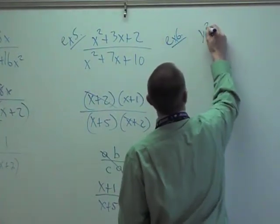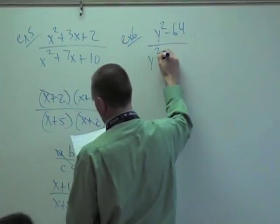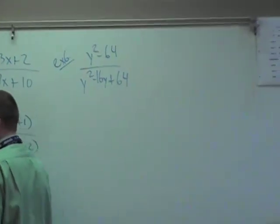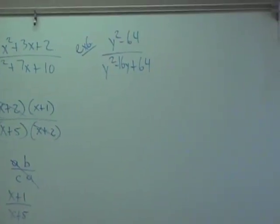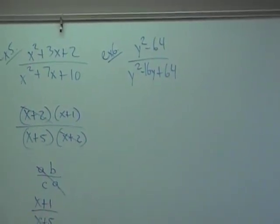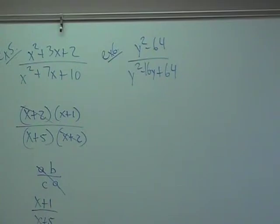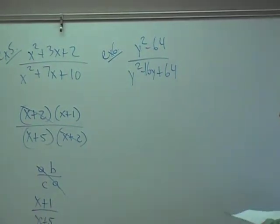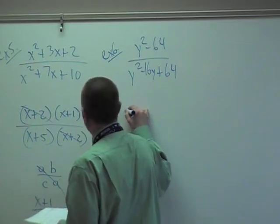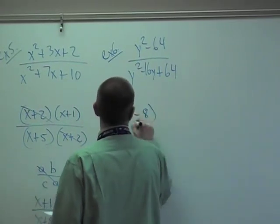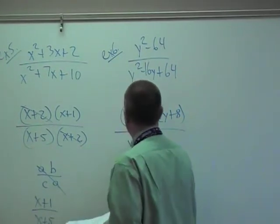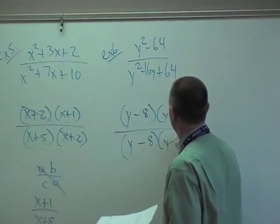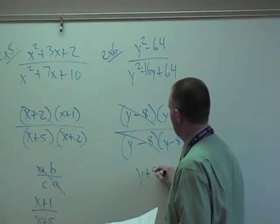Example 6: y squared minus 64, difference of two perfect squares, over y squared minus 16y plus 64. Factor, simplify if you can. What's the top factor into? y plus 8, y minus 8 over y minus 8 squared. Again, those cancel, so you have y plus 8 over y minus 8.